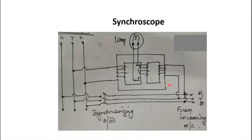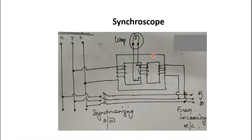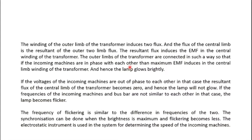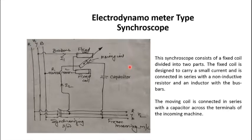If one source is faster and the other slower, the lamp will flicker because the rate of change is not exactly 50 Hz, indicating a phase difference. However, this conventional synchroscope cannot tell us which source is faster and which is slower — that is its limitation.